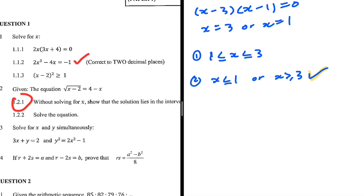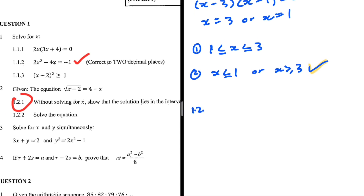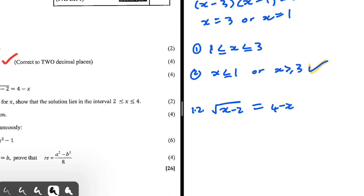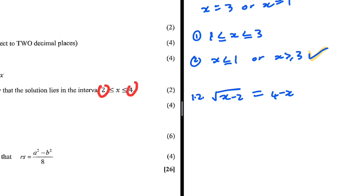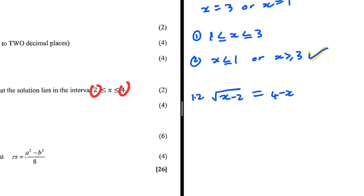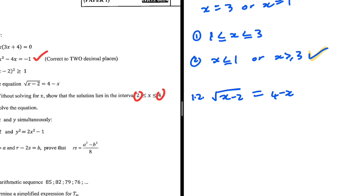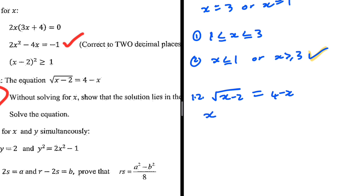Now comes the equation I want help with. Question 1.2 says: given the equation square root of x minus 2 equals 4 minus x, without solving for x, show that the solution lies in the interval two to four. The whole numbers in that interval are 2, 3, and 4, so let's test them. Starting with x equals 2: square root of 2 minus 2 is square root of zero, which is zero, and 4 minus 2 is 2. Zero does not equal 2, so x equals 2 is not a solution.